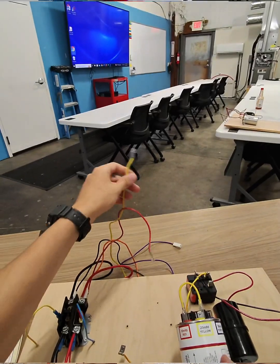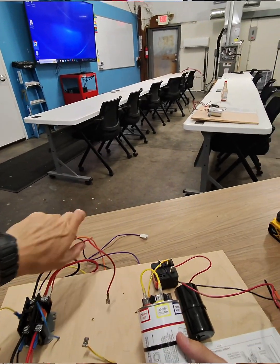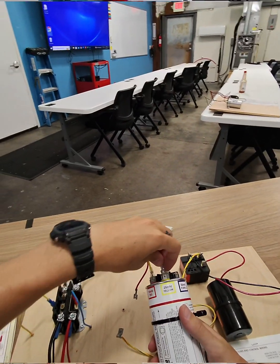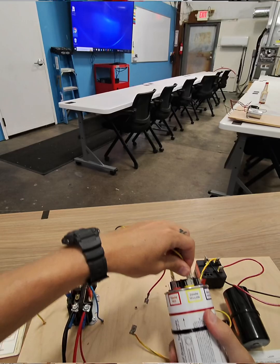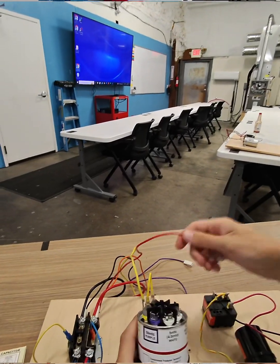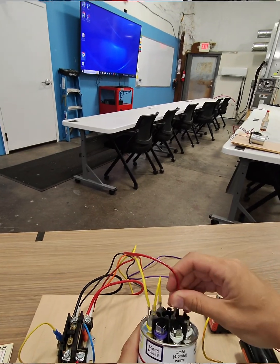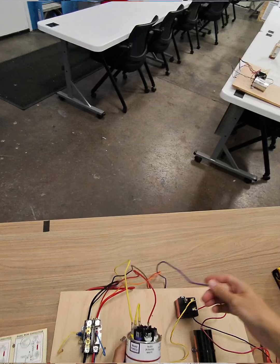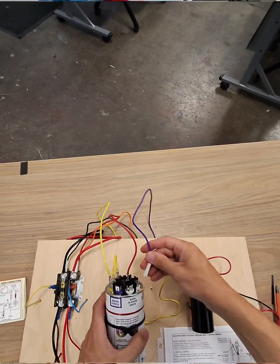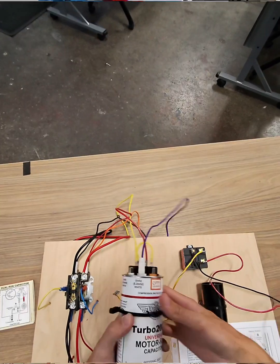So on this part, nothing changes too much. You do want your original Herm wire to go to the highest Herm. So that's going to be your 20, of course. Your red common coming from the contactor is going to go to the center, and your fan wire is going to go to 5, like it was. Perfect.